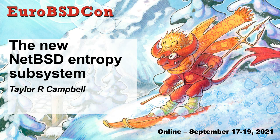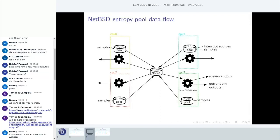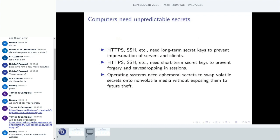This is a talk about the design that went into the new NetBSD entropy subsystem — the part of the system that operates behind the scenes when you try to read from /dev/urandom or similar. I'm going to go into the background of what entropy is and why it's significant for computing, some of the practical considerations that shaped the design, and the cryptographic choices made for NetBSD's new entropy subsystem.